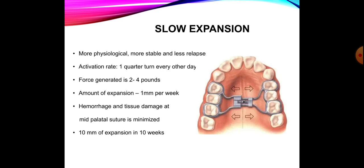Slow expansion achieves 10 millimeters in 10 weeks. This is similar in end result to rapid palatal expansion: rapid expansion gives initially 80% skeletal and 20% dental, but after stabilization at four months gives 50% skeletal and 50% dental. In slow expansion, 50% skeletal and 50% dental change is present from the beginning and is maintained. So both achieve the same final result — 5 mm skeletal and 5 mm dental — but slow expansion is more physiologic, more stable, and takes the same total time.